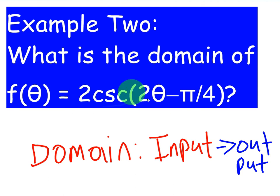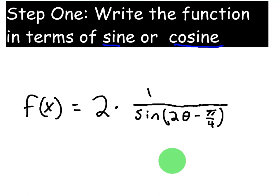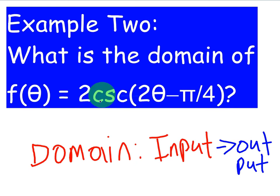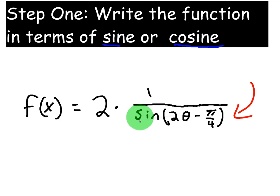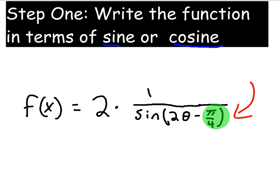We need to find what angles create those asymptotes for this function. This function has been modified — there's a 2 and a (2θ - π/4). Step one is to write the function in terms of sine and cosine. Cosecant equals one over sine by the reciprocal identity, so we write it as 2 times (1/sin(2θ - π/4)), keeping the same argument inside. We do this because we cannot have zero in the denominator.